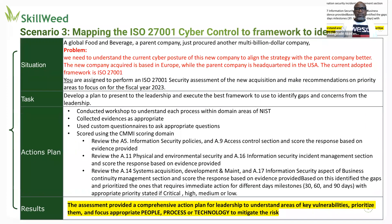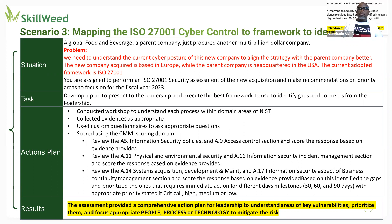Scenario three is similar but uses the ISO 27001 framework. ISO 27001 is mostly geared toward global organizations — for example, if you have a new location in Europe or Latin America. Your role is to understand each process within the domain areas of ISO 27001, collect the right evidence, do questionnaires, do a CMI scoring, and then get into security controls such as Information Security Policy (A5), Access Control (A9), and Physical and Environmental Security (A11). At the end of the comprehensive assessment, you give guidance to leadership on what they should do.